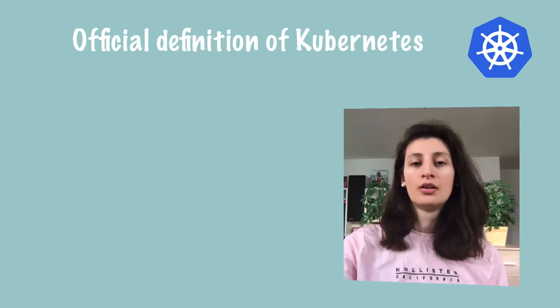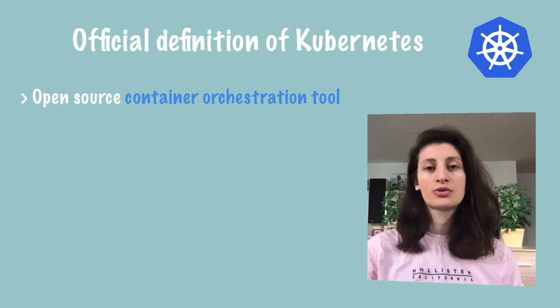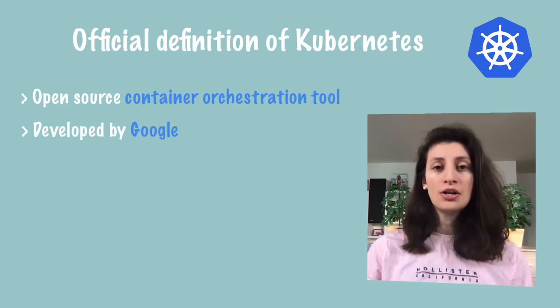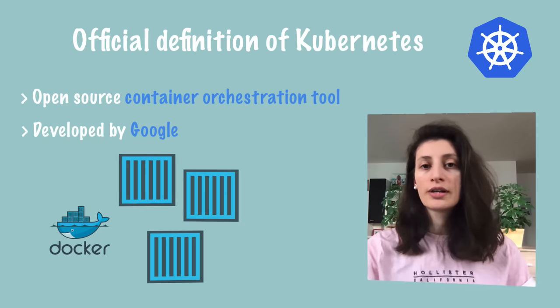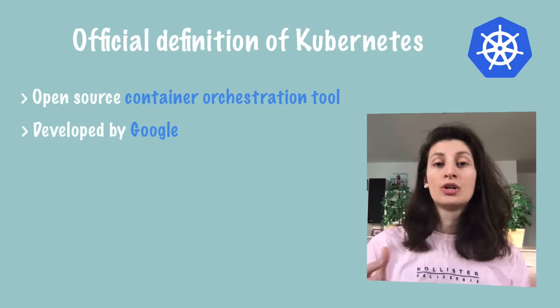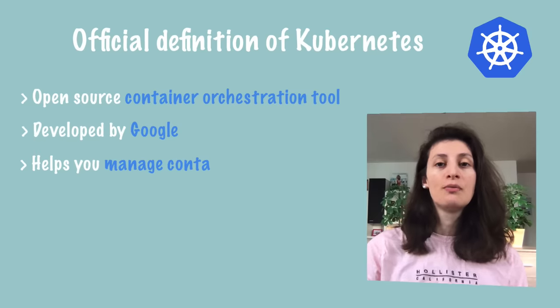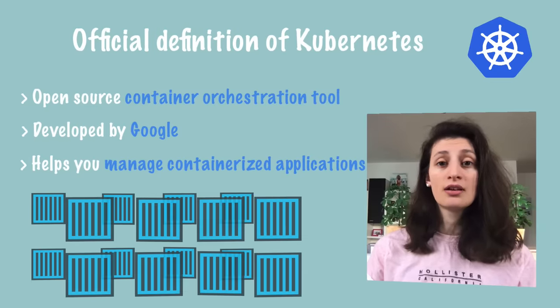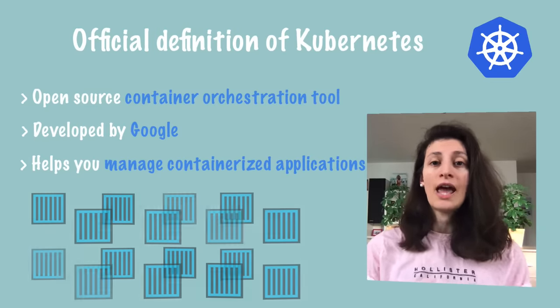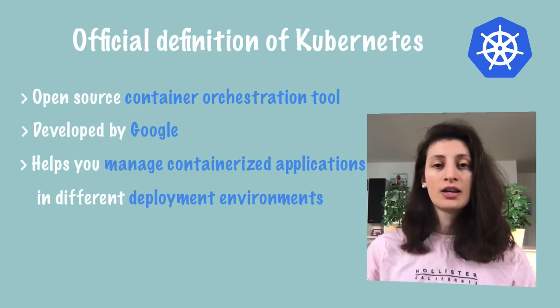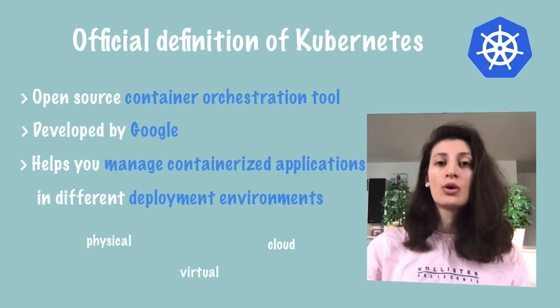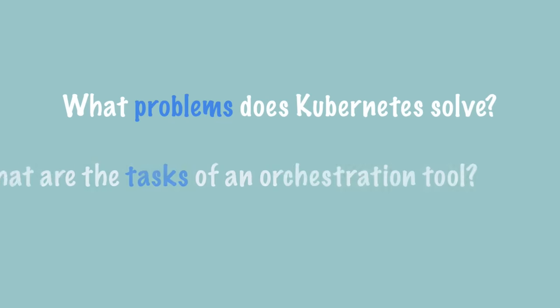What is Kubernetes? Kubernetes is an open source container orchestration framework, which was originally developed by Google. At its foundation, it manages containers — be they Docker containers or from some other technology — which basically means that Kubernetes helps you manage applications made up of hundreds or maybe thousands of containers. It helps you manage them in different environments like physical machines, virtual machines, cloud environments, or even hybrid deployment environments.